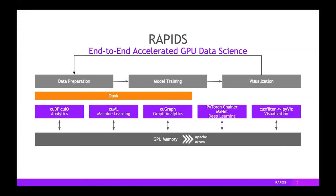If we move data preparation, model training, and visualization onto the GPU, we can put the entire feedback loop on the GPU so you can do science faster, test more hypotheses, and iterate more quickly. Rapids has a suite of libraries to allow you to do this: CUDF for data frame analytics, IO libraries for ingestion, machine learning libraries, graph analytics libraries, deep learning support, and visualization — all sitting on top of the GPU, using the Apache Arrow memory specification, and scaling with Dask and soon Spark.